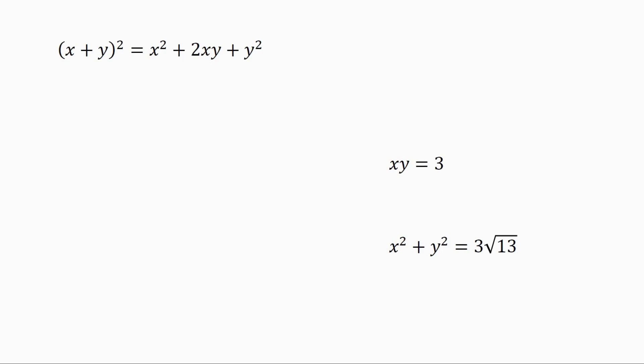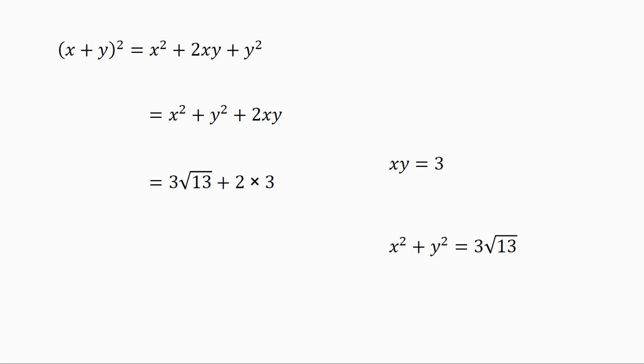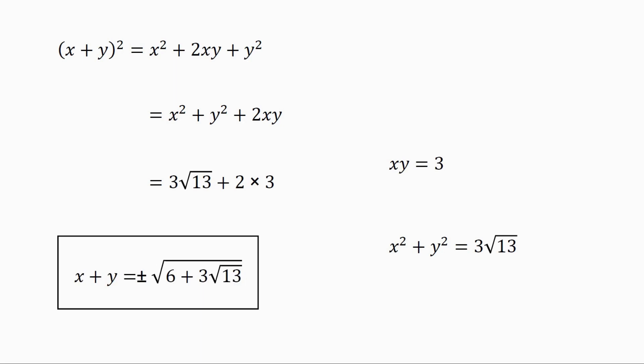We know x plus y whole squared equals x squared plus 2xy plus y squared. Plugging in the values of xy and x squared plus y squared, we get x plus y whole squared equals 3 times square root of 13 plus 2 times 3. Simplifying, x plus y equals plus or minus the square root of 6 plus 3 times square root of 13.